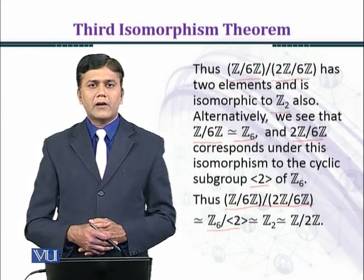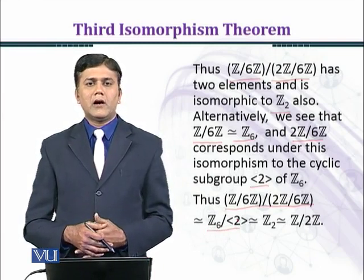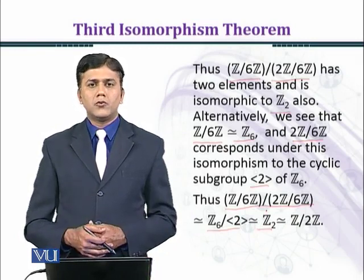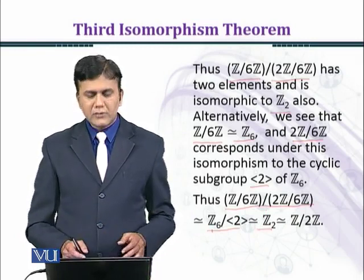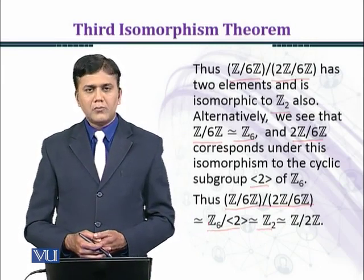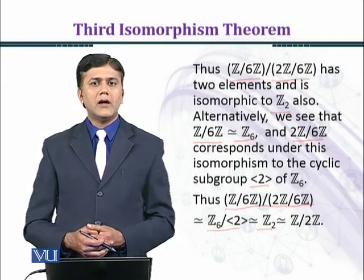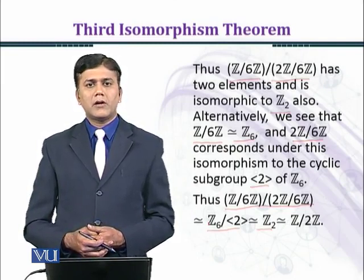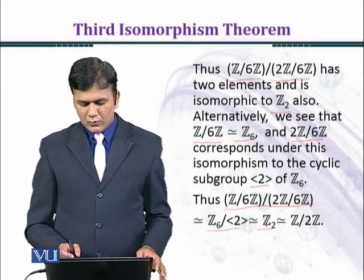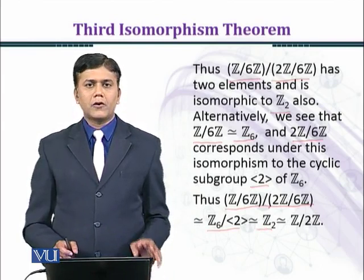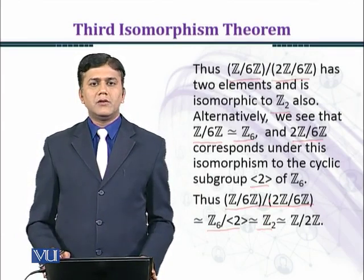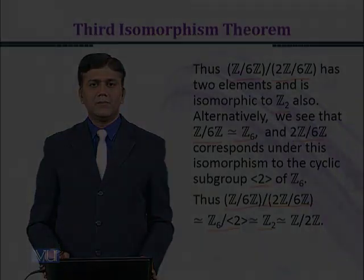This quotient is isomorphic to Z₂, because Z₆ has order 6 and the cyclic group generated by class 2 has order 3, so when we mod out we have two elements. Therefore Z/6Z over 2Z/6Z is isomorphic to Z₂, which equals Z over 2Z, confirming the Third Isomorphism Theorem.